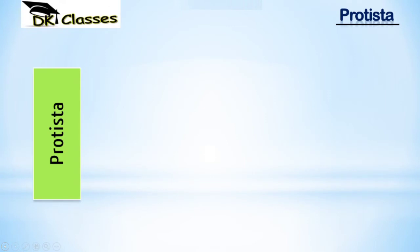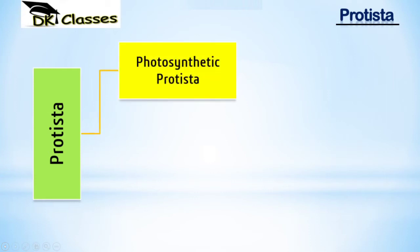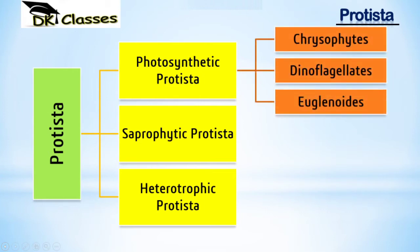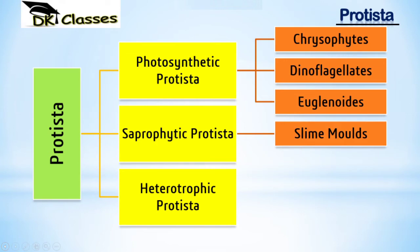For classification, Protista is a kingdom divided into phyla based on mode of nutrition: photosynthetic Protista, saprophytic Protista, and heterotrophic Protista. Photosynthetic phyla include Chrysophytes, Dinoflagellates, and Euglenoids — all members can make their own food in the presence of sunlight. Saprophytic Protista are the slime molds. Heterotrophic Protista are the Protozoans.